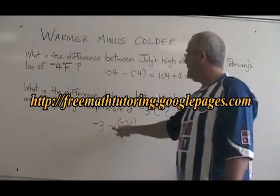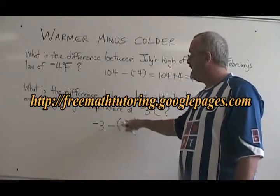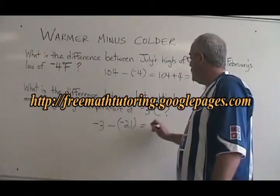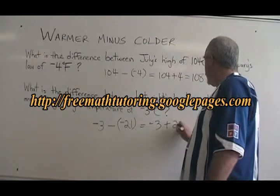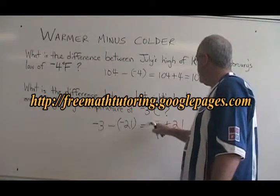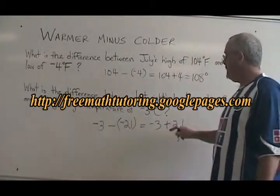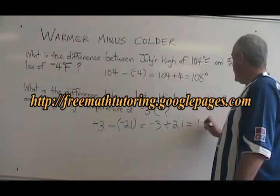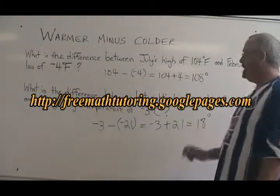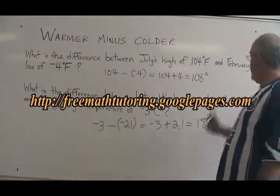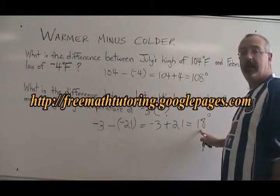Minus 3 minus negative 21. The two negative signs cancel here, so it's equal to minus 3 plus 21. Minus 3 plus 21 equals positive 18. The difference between minus 21 and minus 3 is indeed 18 degrees.